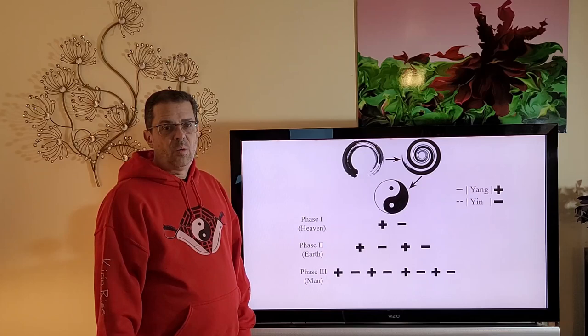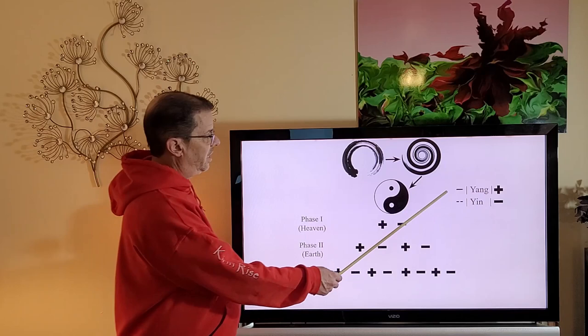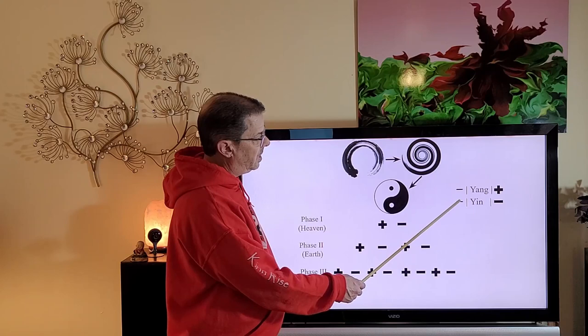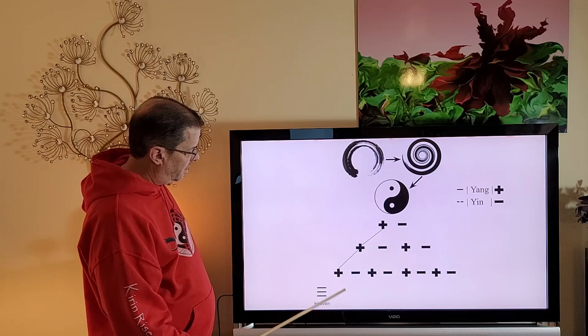Now that the three powers of heaven, earth, and man were created, we can see the development of what's called the myriad of things, which from the combination of all the positive and negative. So positive is written with a single long brush stroke. Negative or yin is written and represented by two shorter brush strokes. So as we go through the interactions here, we see the formation of the eight trigrams.